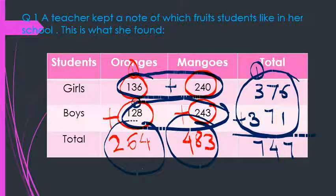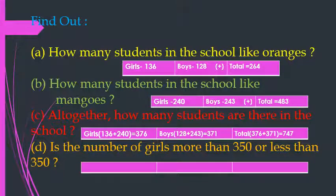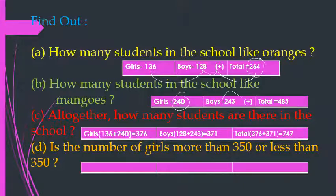The number of children who like oranges and mangoes should also come to 747. So quickly, let's review all these questions. How many students in the school like oranges? Number of girls like oranges are 136, number of boys like oranges are 128, so when we add both we get 264 children like oranges. How many students like mangoes? 240 girls like mangoes, 243 boys like mangoes, so when we add both we get 483 students who like mangoes.